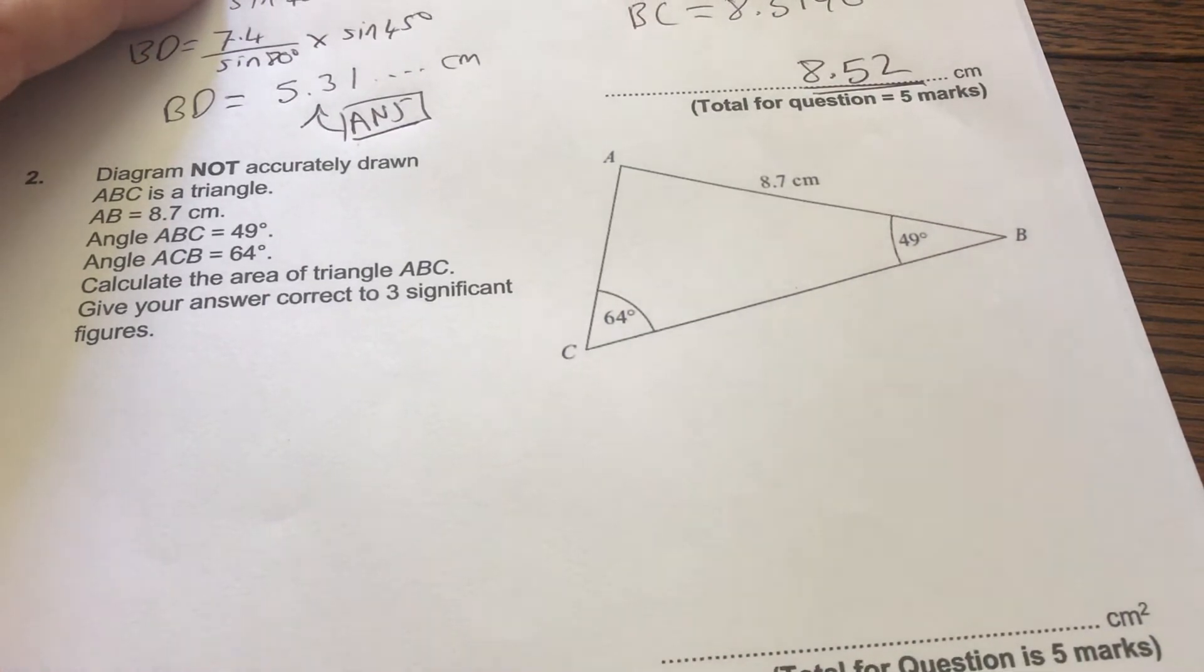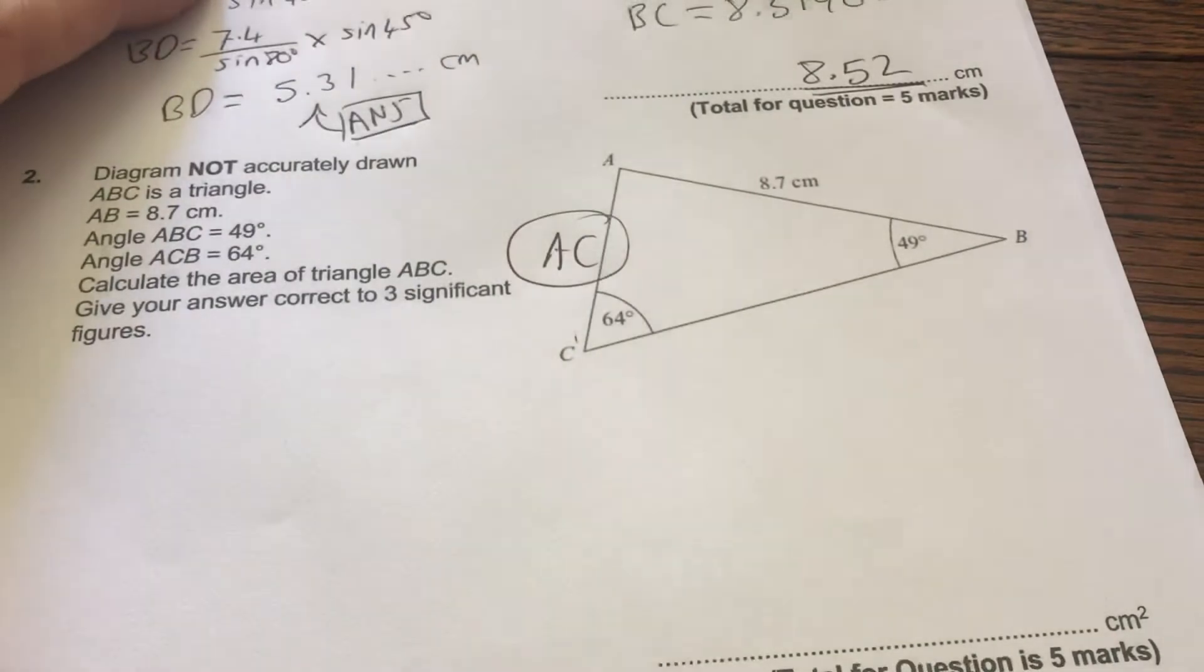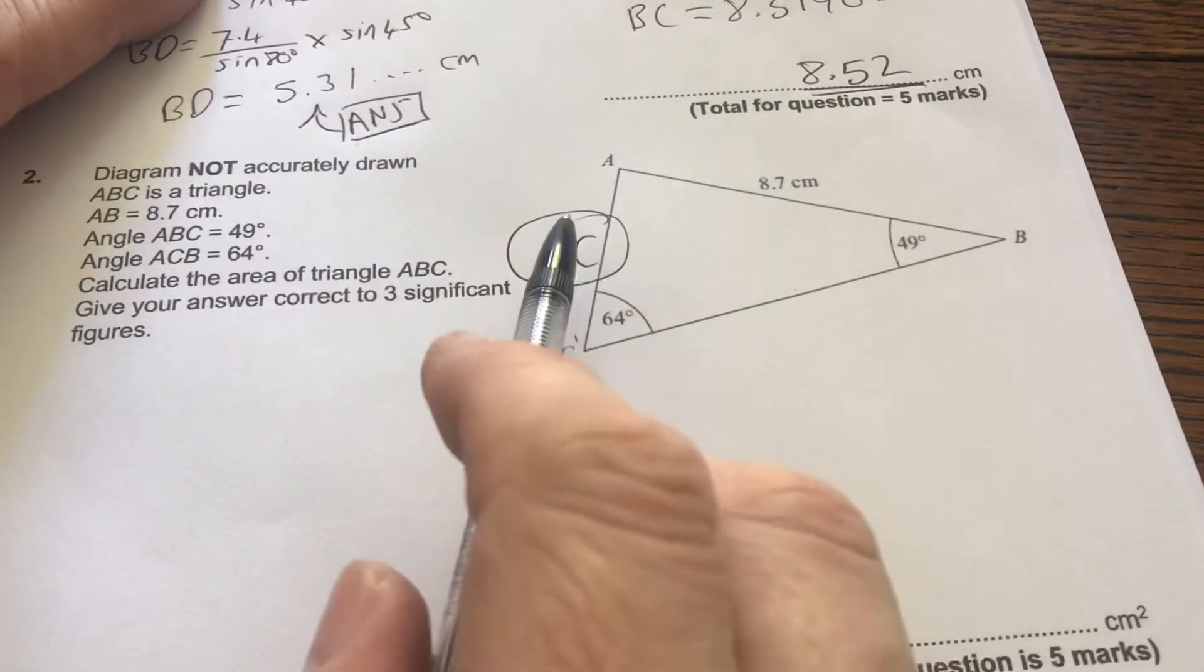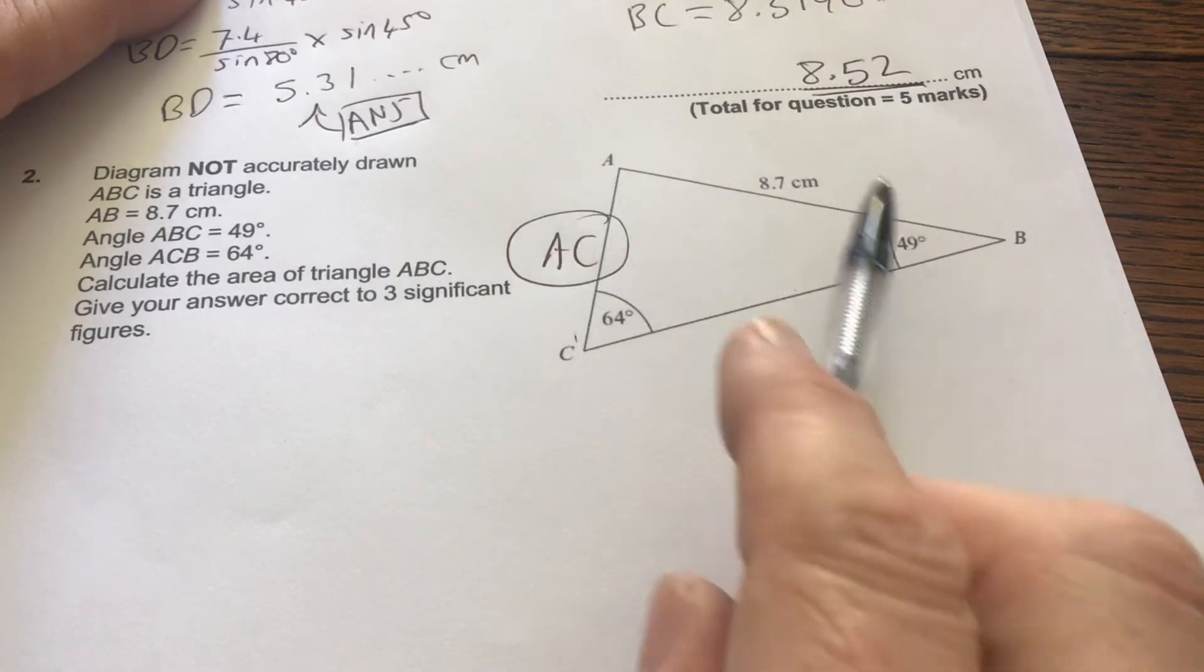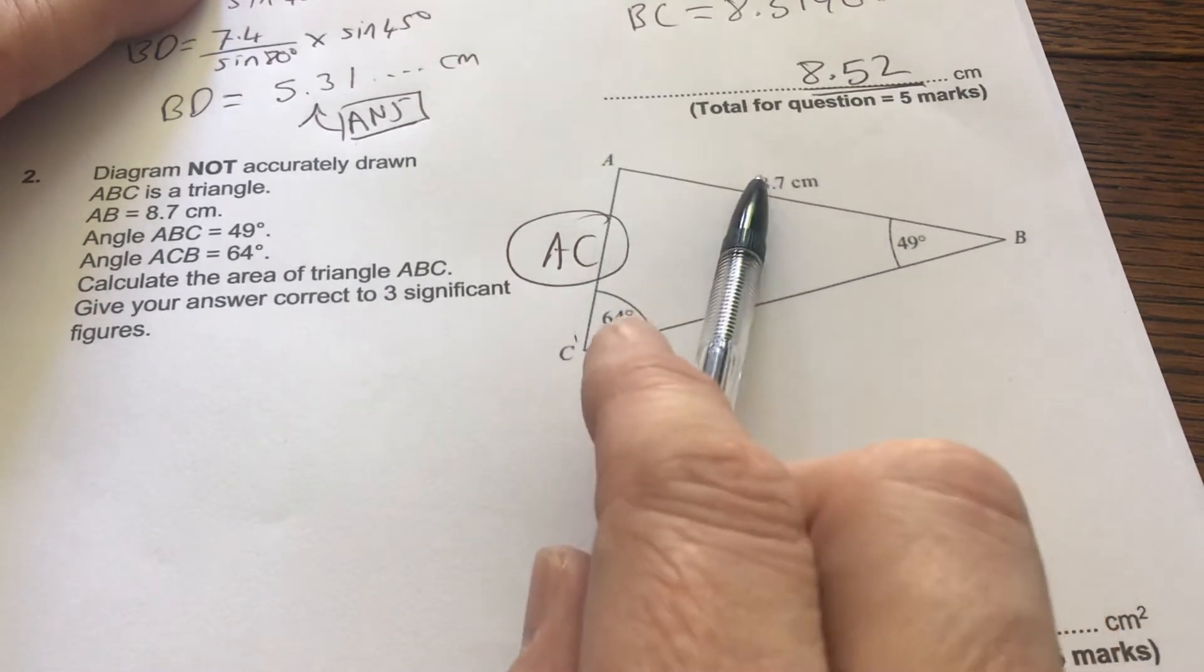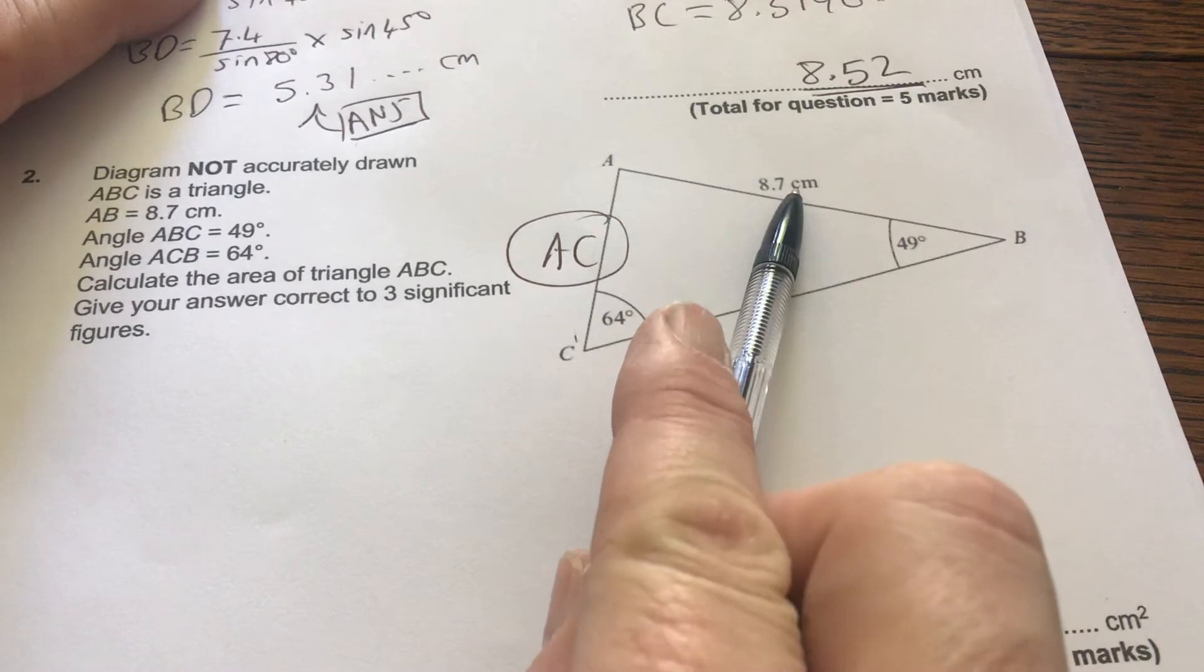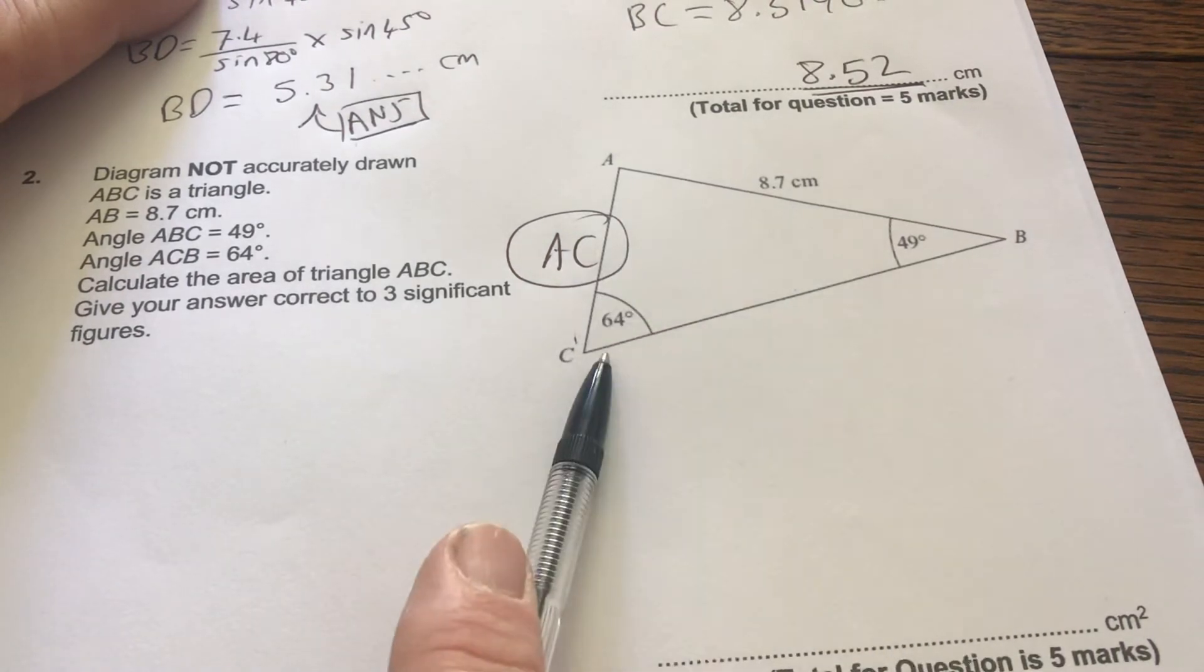So we're going to find AC, this is what we're going to find first. This is our best one to find because we can use the sine rule because that's opposite 49 and then we've got a pair. That's a given side opposite a given angle.